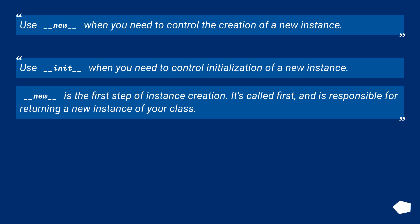Use __new__ when you need to control the creation of a new instance. Use __init__ when you need to control initialization of a new instance. __new__ is the first step of instance creation. It's called first, and is responsible for returning a new instance of your class.